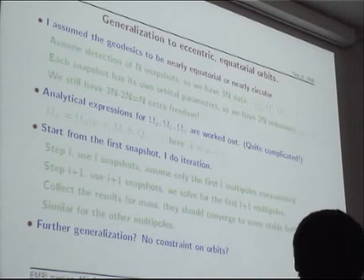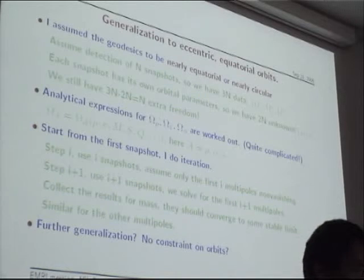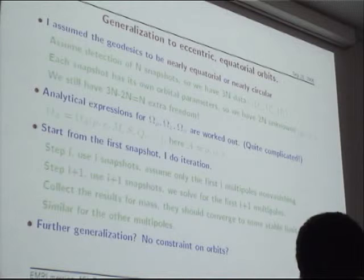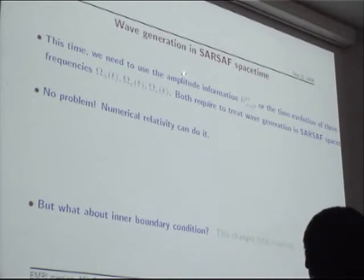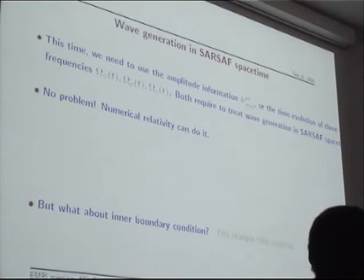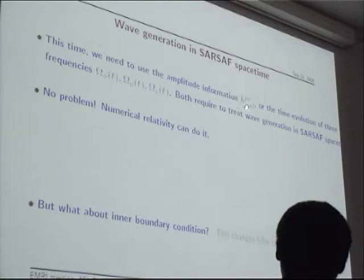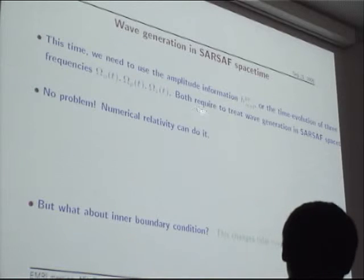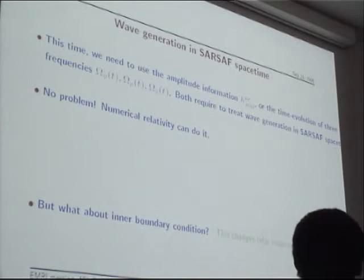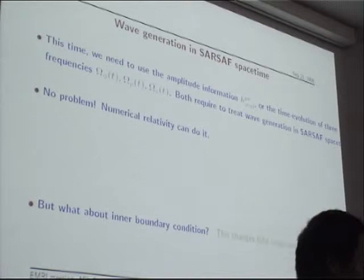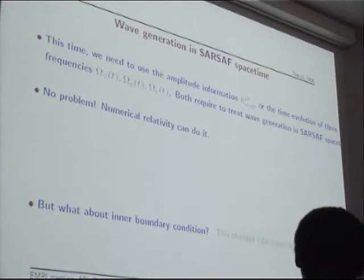Now we want to ask: can we go one step further? Can we abandon all constraints on the orbit and consider the most generic, inclined, and eccentric orbit? In this case, we need to use the amplitude information, because from the degree-of-freedom argument we must use more information. We must use the amplitude information and the time evolution of all three frequencies. Both are required to treat wave generation in this spacetime. Up to this slide, all my arguments used only the axisymmetry and stationary symmetry.